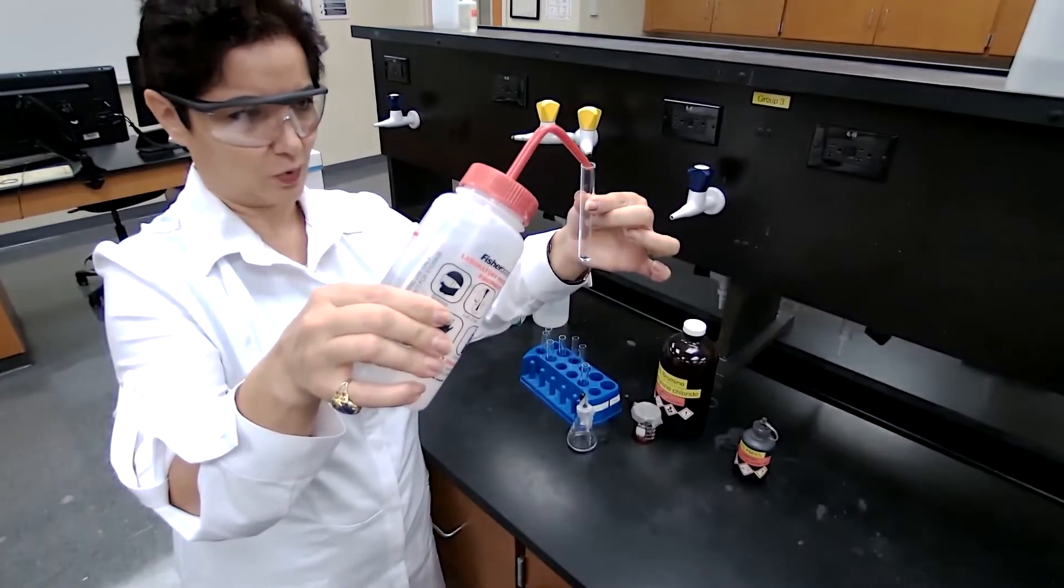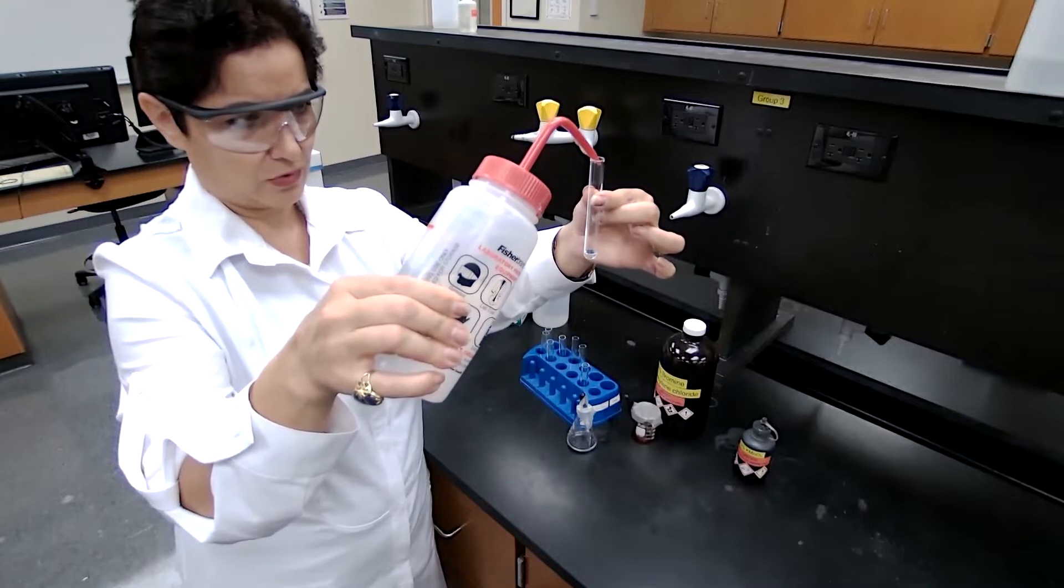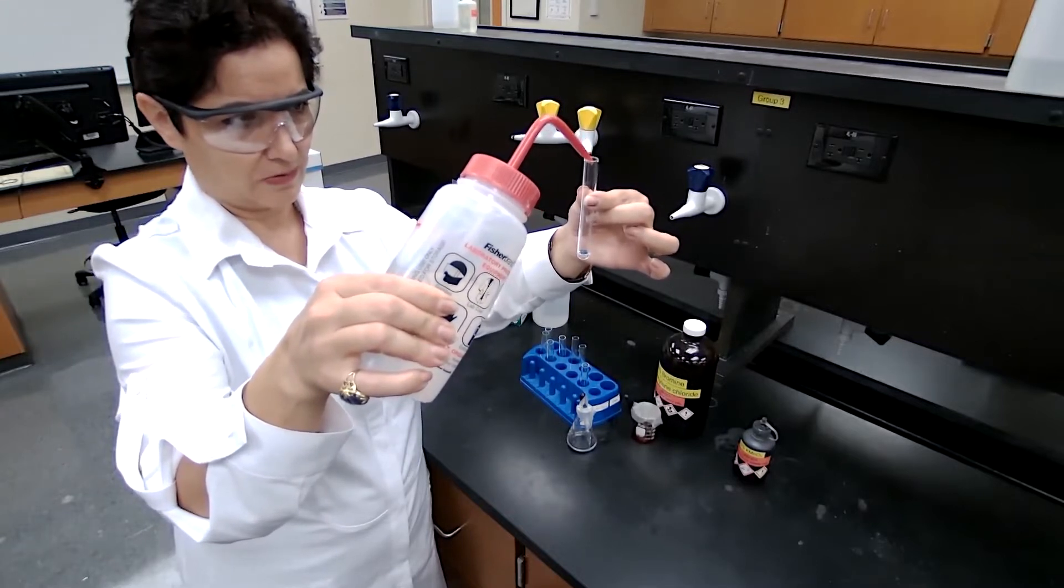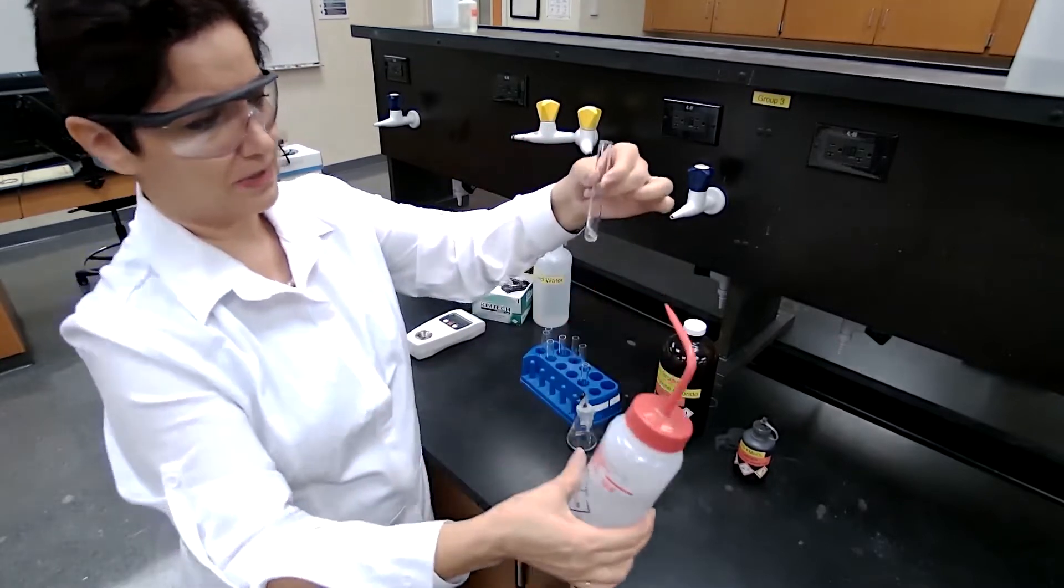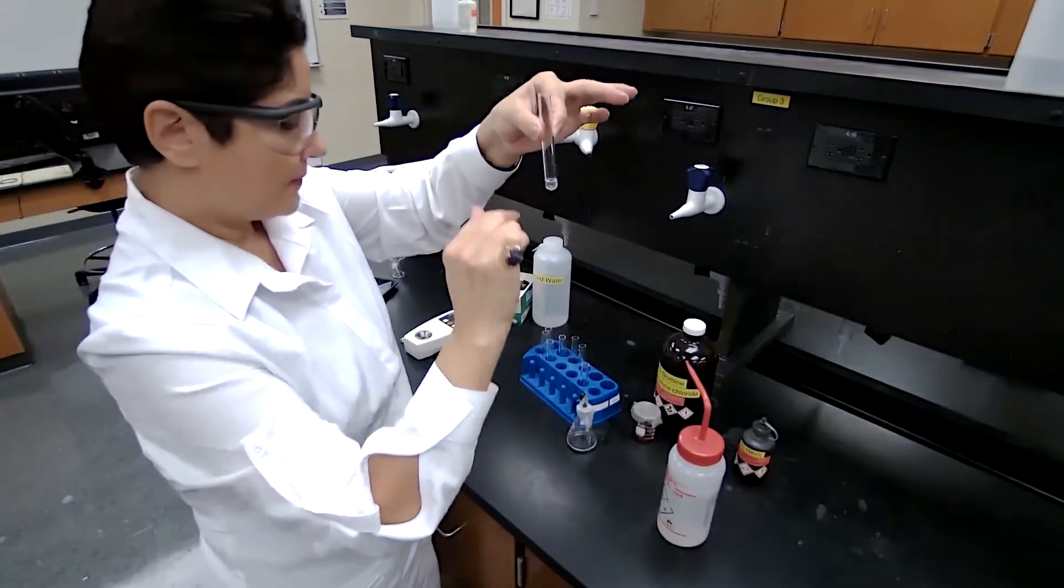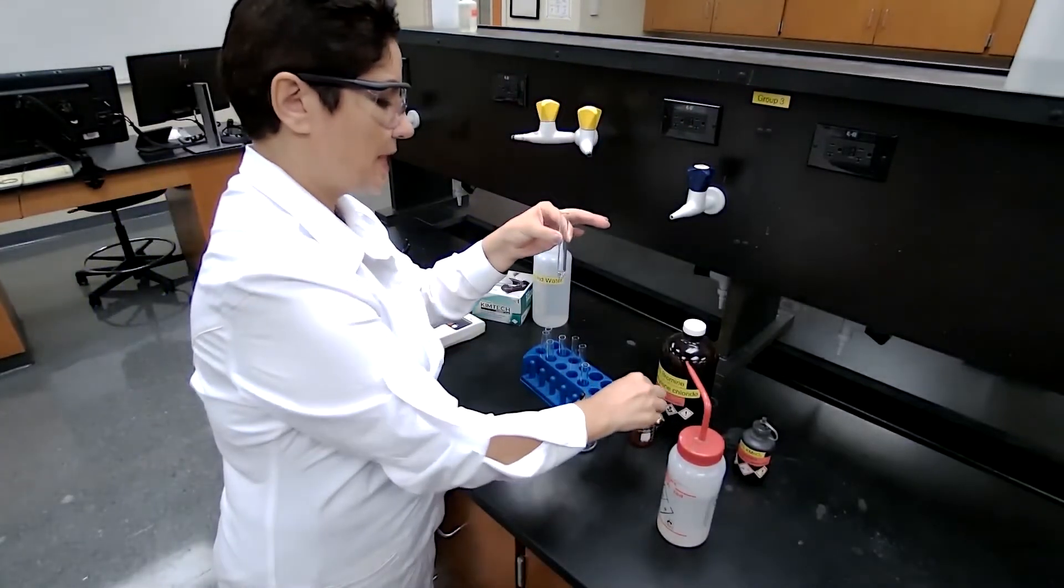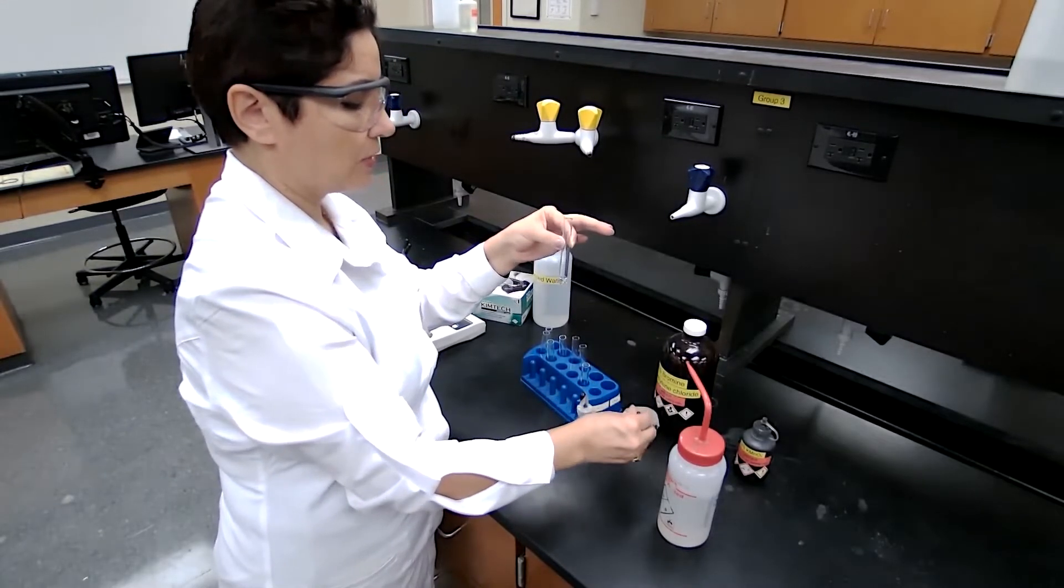You can use a dropper or carefully use this dispenser. It's about one milliliter or one centimeter height of the sample in a small testing tube. And we add one drop of the bromine in methylene chloride.